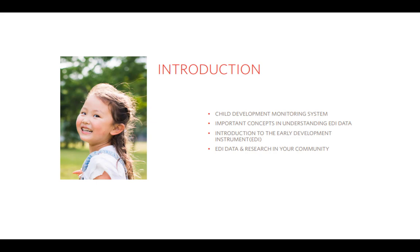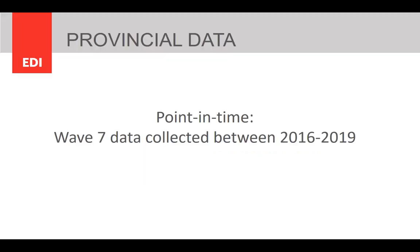The profiles begin with an introduction to some important HELP information and EDI basics. We have reviewed some of this information in this video, but encourage you to read more about the important concepts that underpin EDI data in this introduction. As mentioned, the profiles provide both point-in-time data — meaning data from Wave 7 that was collected between 2016 and 2019 — and trends over time from Wave 2. To begin, we'll take a look at the provincial Wave 7 data starting on page 18 of the community profiles.